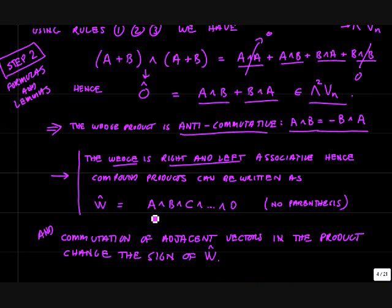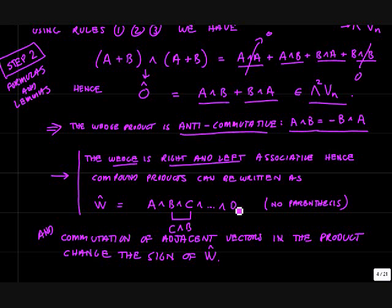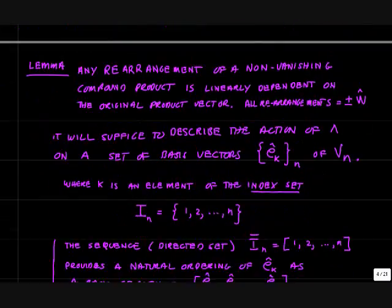Another property of the wedge product is that compound wedge products — like W equals A wedge B wedge C through D — don't really need parentheses. If you commute adjacent vectors in such a product, for example taking B wedge C and rewriting it as C wedge B, that changes the sign of the product. So commutation of adjacent vectors in a product changes the sign of the resulting vector.